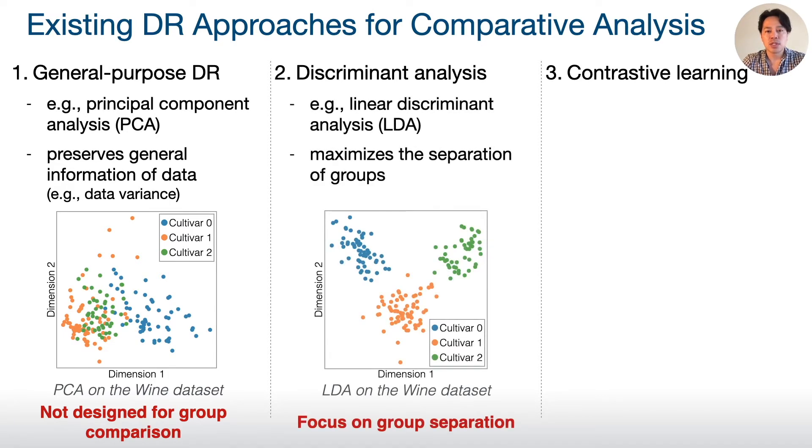The second approach is using discriminant analysis methods, such as linear discriminant analysis or LDA. This approach focuses on producing the maximum separation between each group. And unlike PCA, the LDA results show the clear separation among groups.